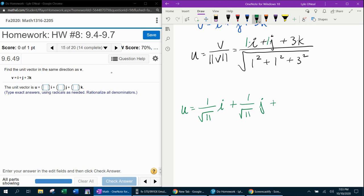Plus, now the coefficient of k is 3. That will be 3 over the square root of 11, times k. Okay, that is the k component of the unit vector.